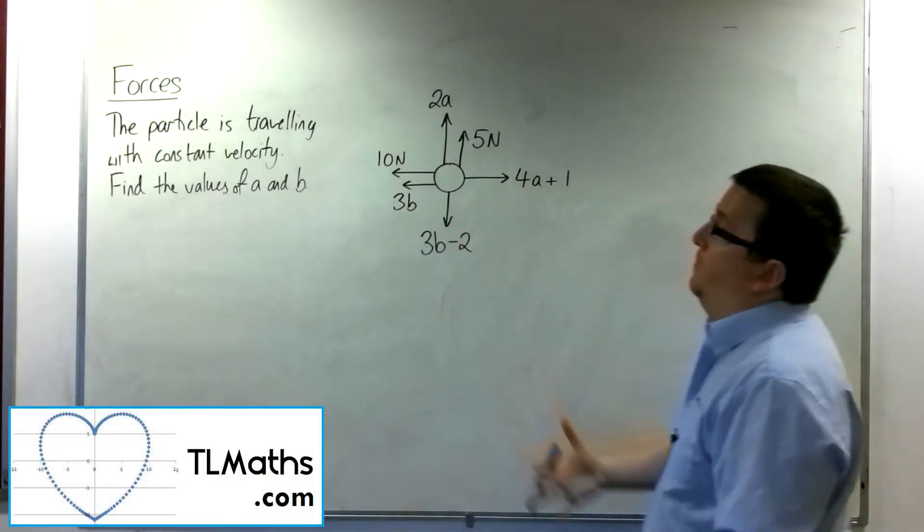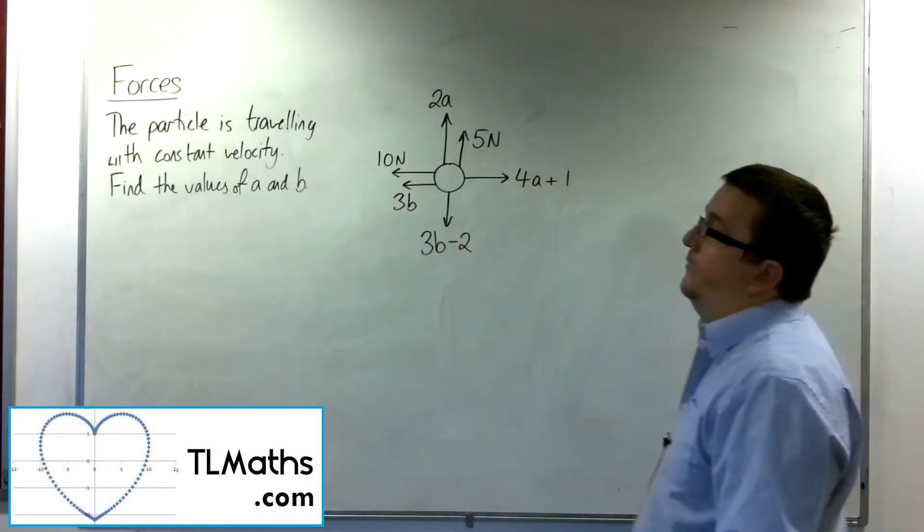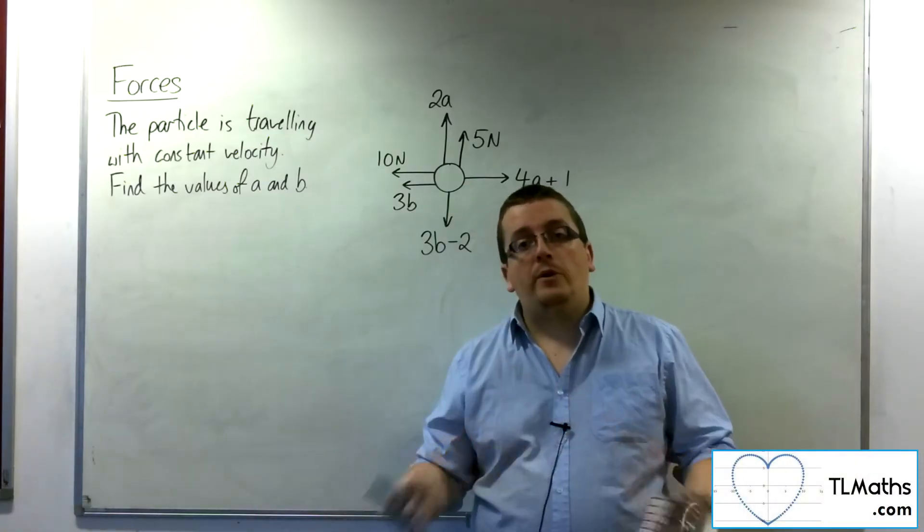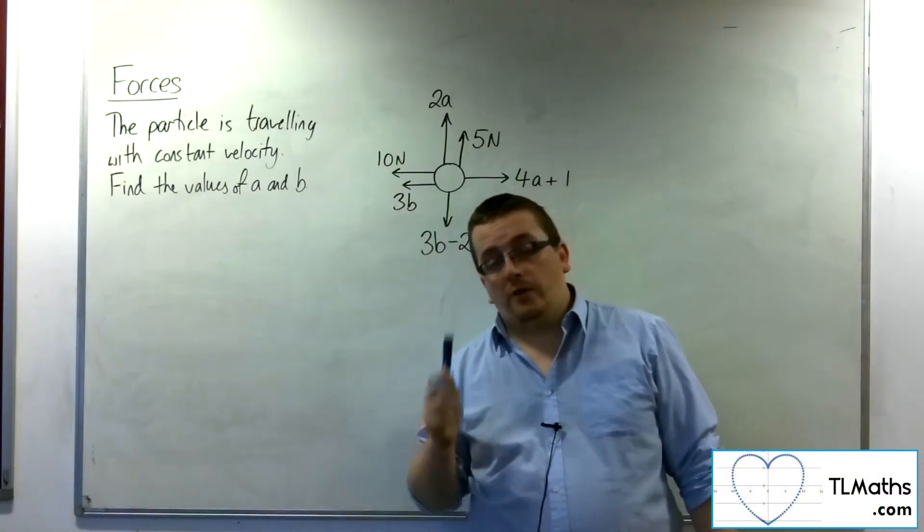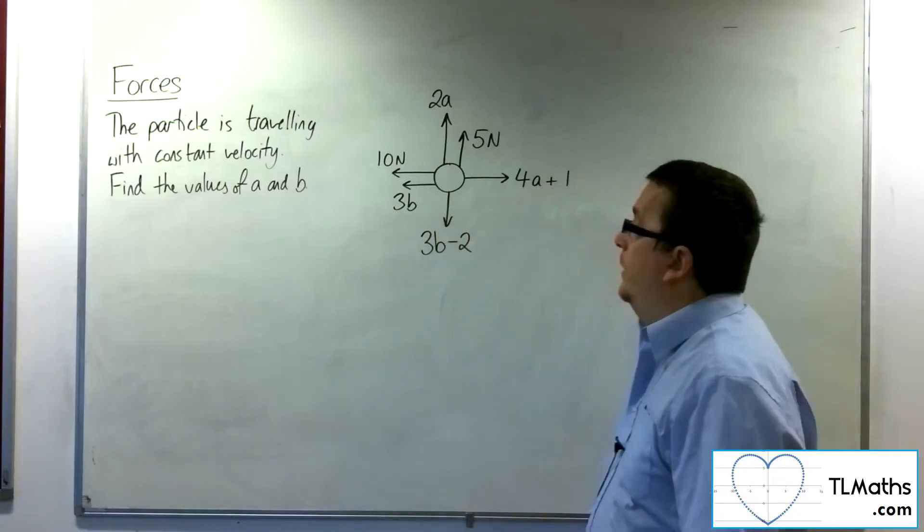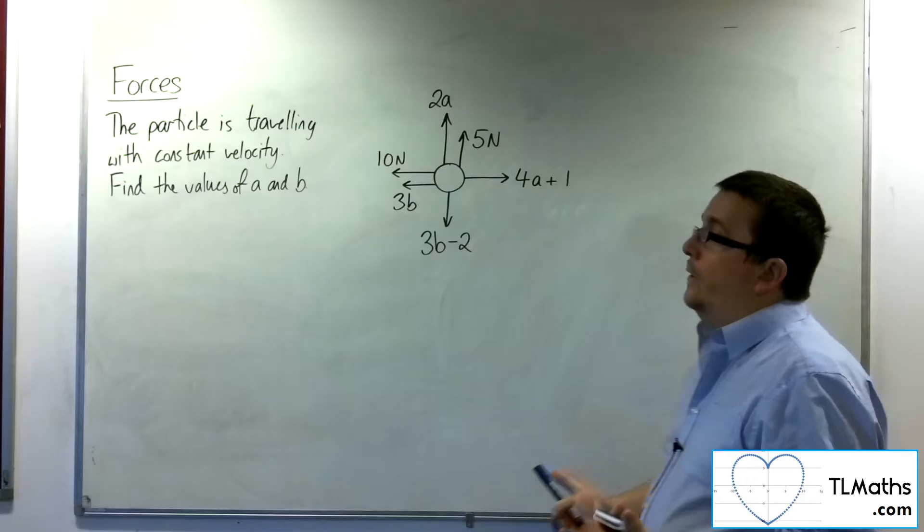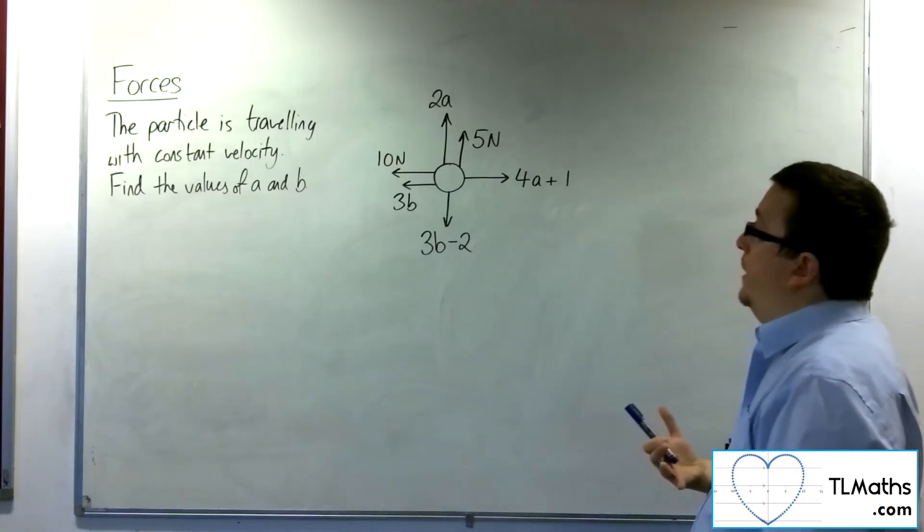In this problem, we've got a particle that's traveling with constant velocity. If it's traveling with constant velocity, there is no acceleration. Newton's first law then says that there is zero resultant force. And so, we can use that fact to find the values of A and B.